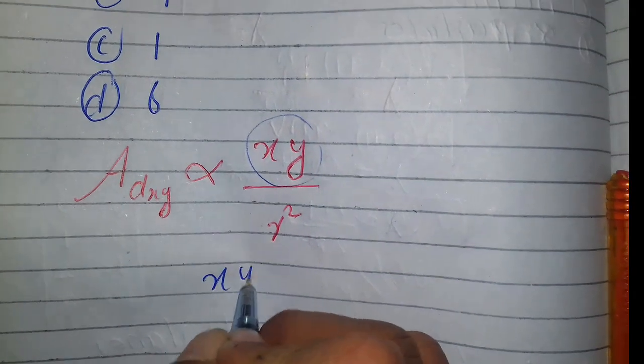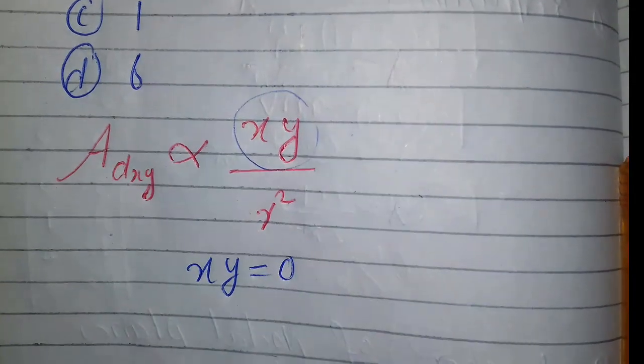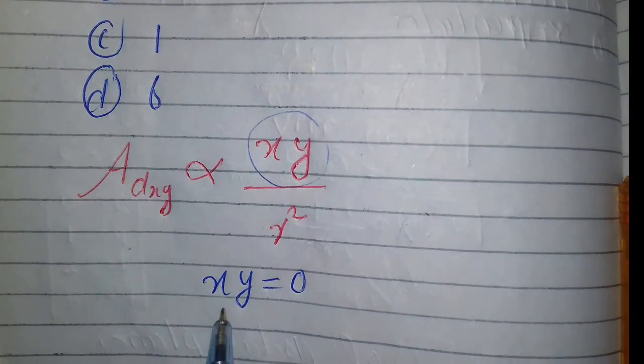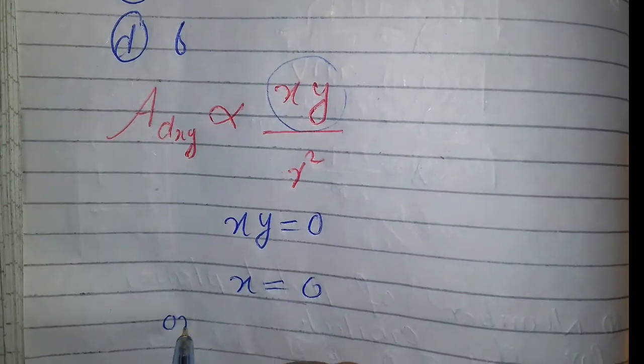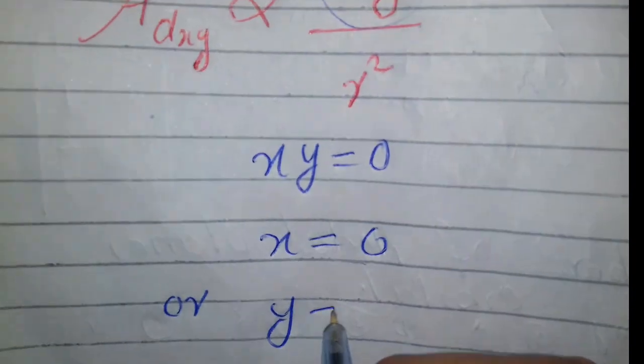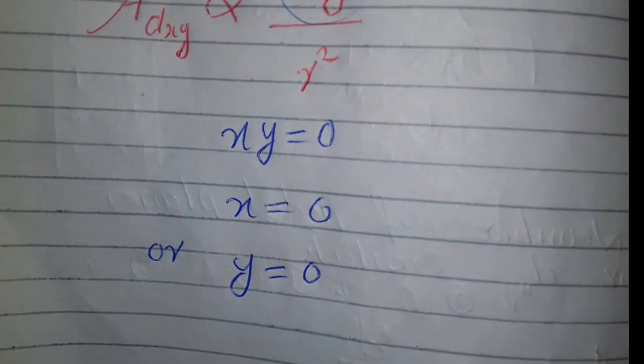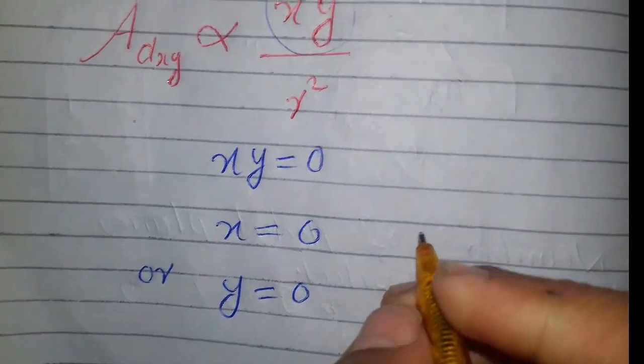When XY is zero, it means either X equals zero or Y equals zero. X is zero for all those points that define the plane containing the Y and Z Cartesian axes.